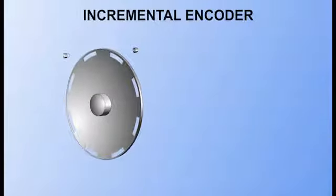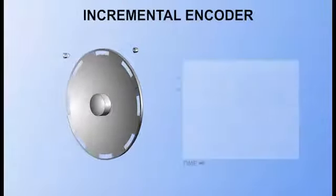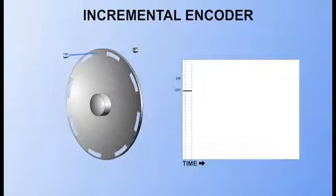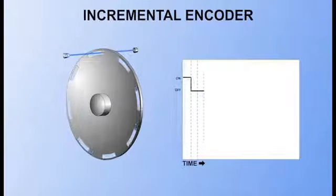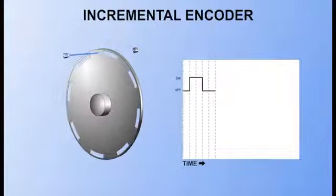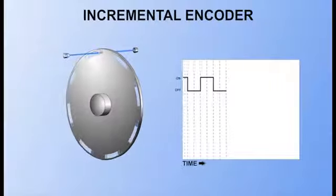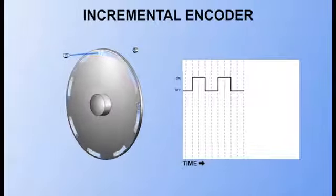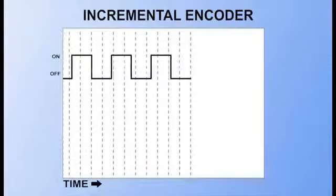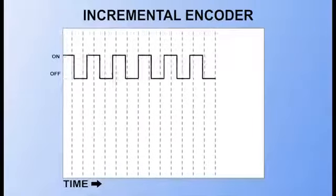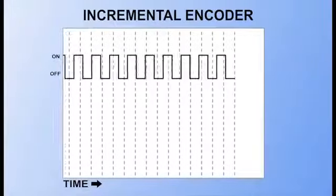If the encoder has only one track, the sensor's output will be a series of on-off pulses. If there are eight on-off pulses for every rotation of the encoder, each pulse represents 45 degrees of rotation. Increasing the number of pulses per revolution will improve the encoder's resolution. For example, 360 pulses per revolution yields a resolution of one degree.